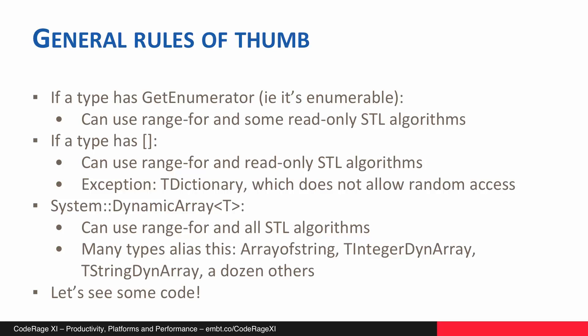If a type has IEnumerable, then you can use range-based for loops and some of the read-only STL algorithms. If a type has the index operator, then you can use range-for and the read-only STL algorithms — one exception there is TDictionary which doesn't allow random access. And then the system dynamic array types — many types alias this such as array of string, TIntegerDynArray, TStringDynArray and a dozen others — those can use range-based for loops and all STL algorithms.